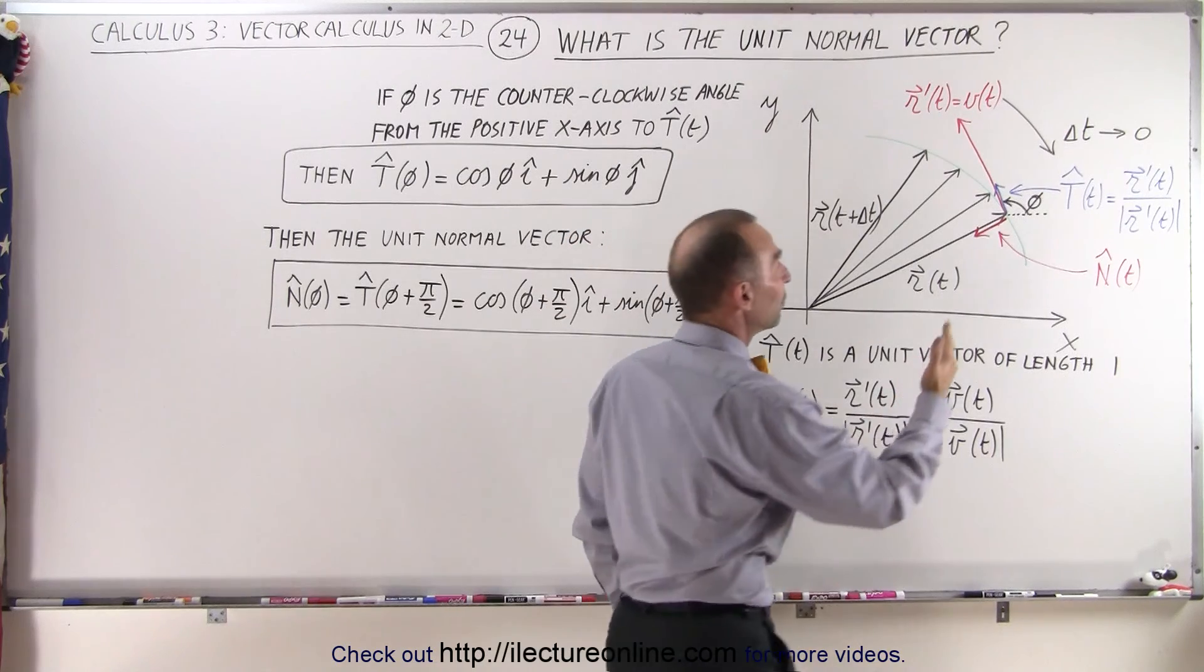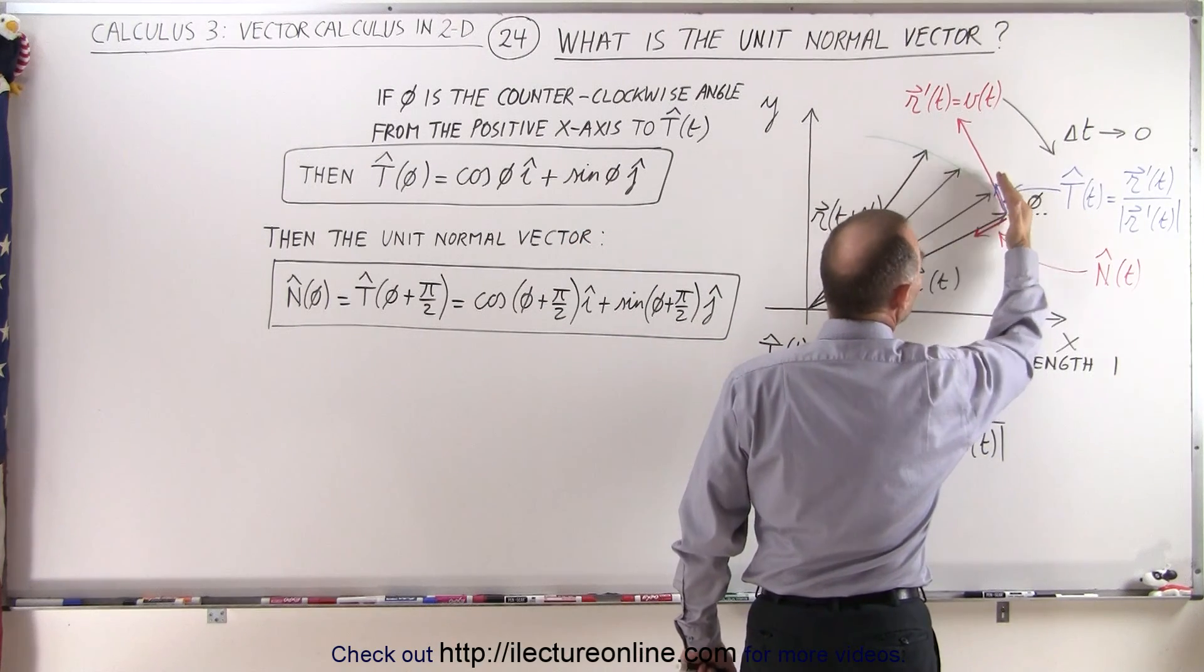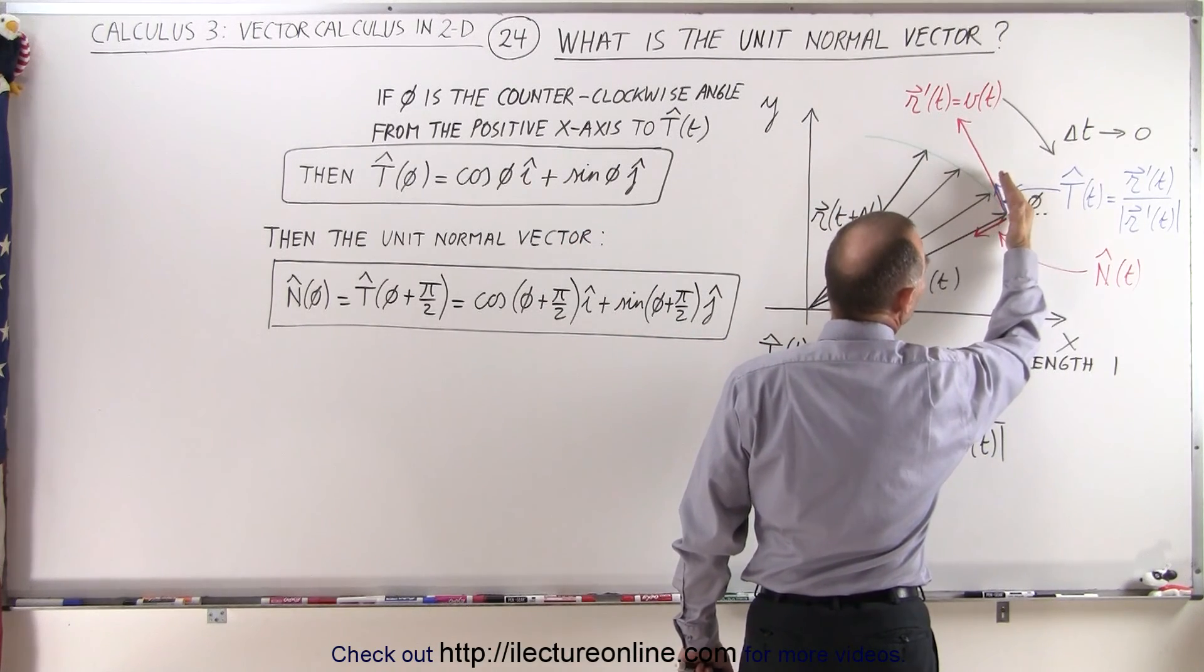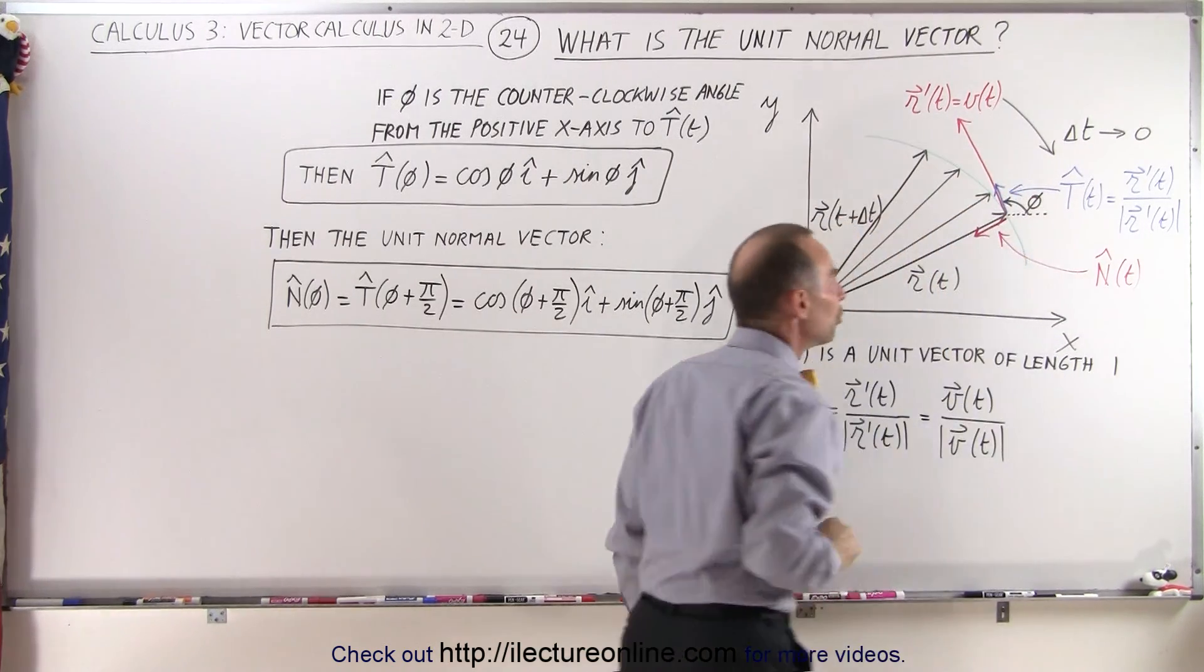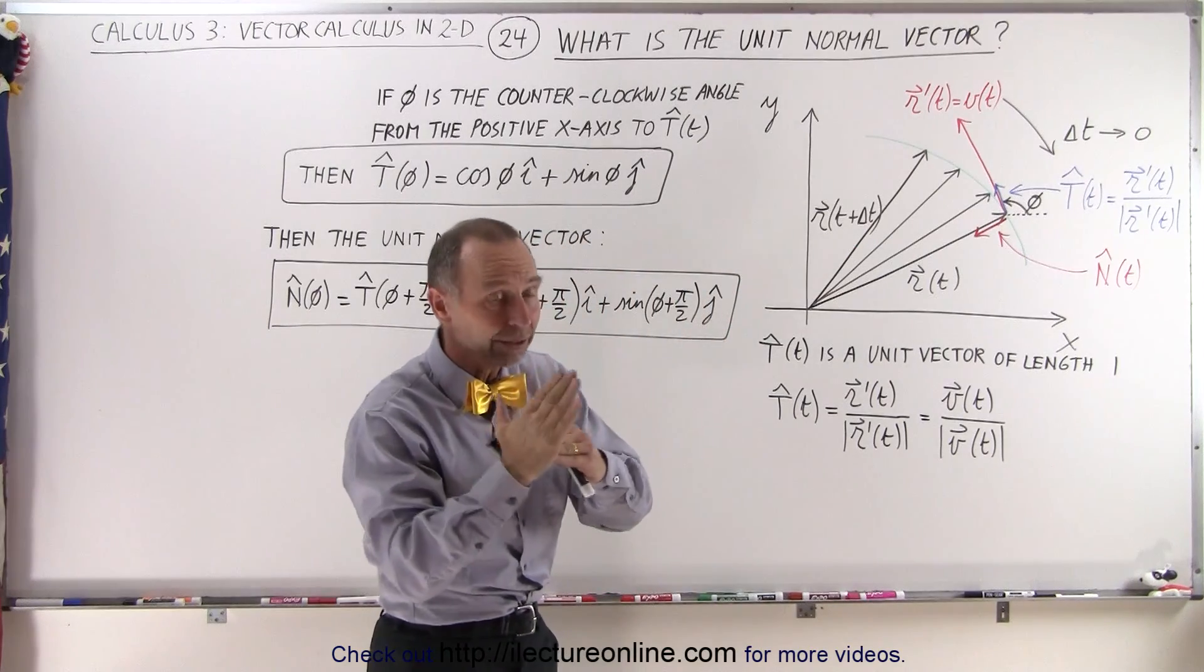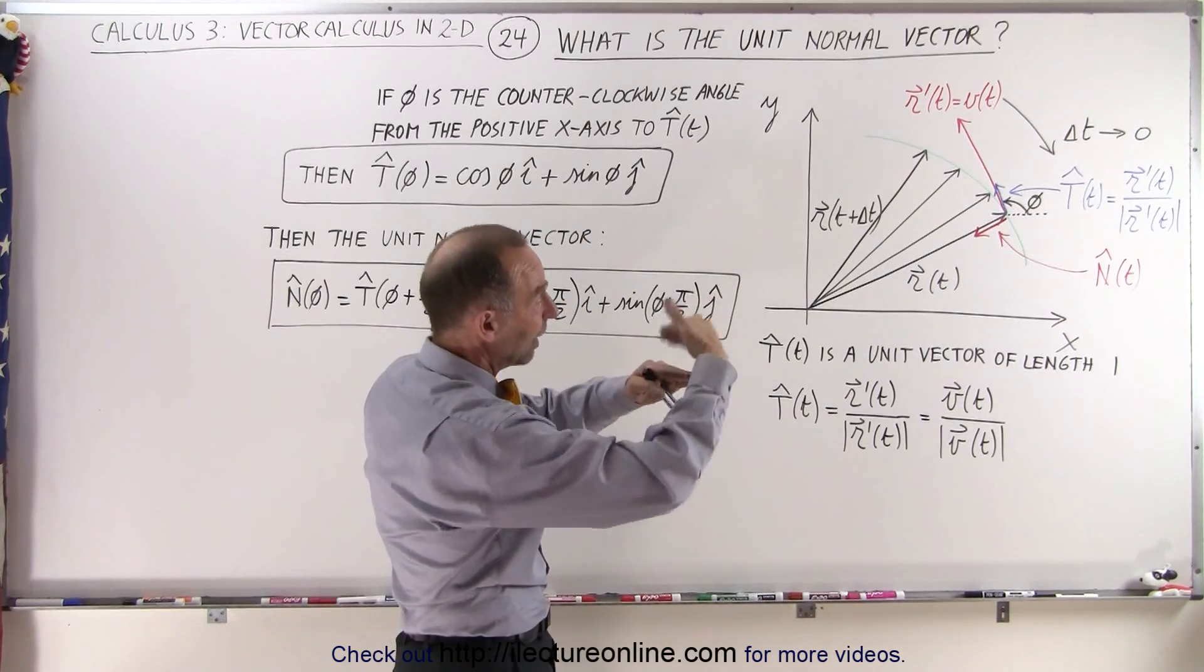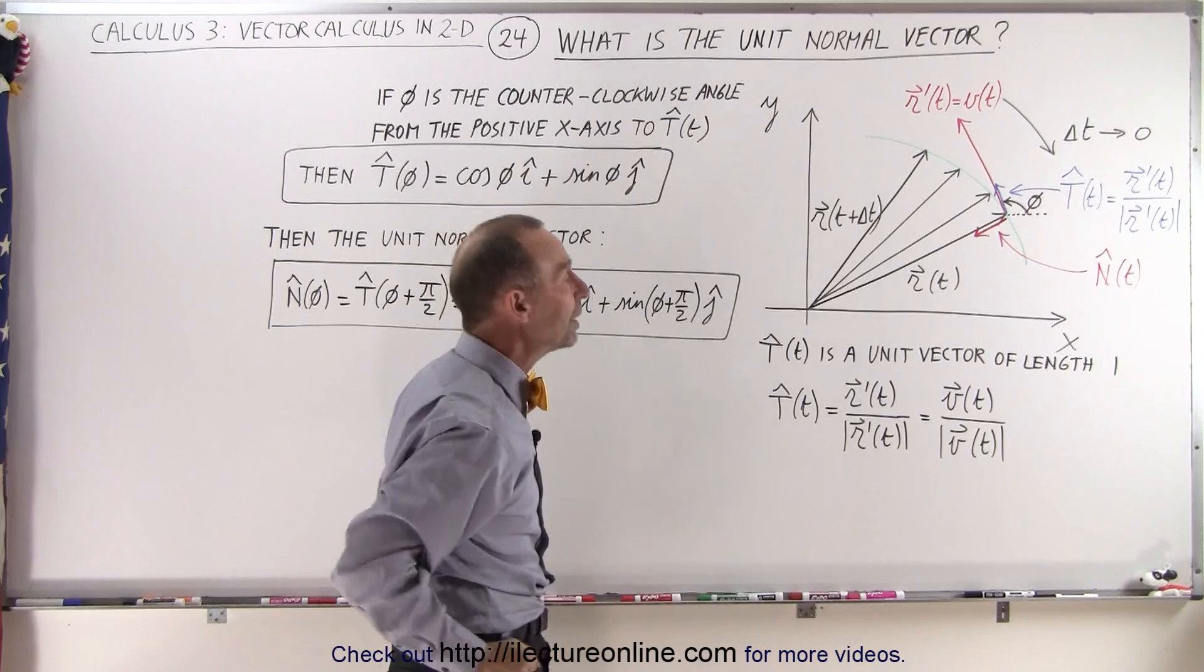In other words, if we take the tangent vector or the unit tangent vector and we rotate it through a 90-degree angle, we end up at the normal unit vector. Normal means perpendicular, tangent means tangent, and of course there's a 90-degree angle between them.